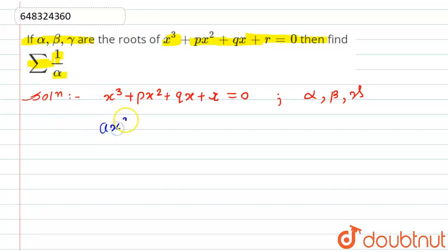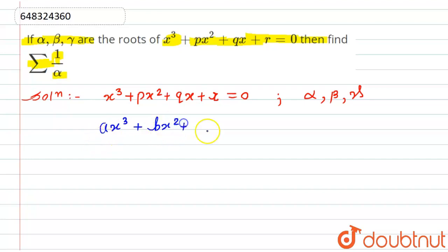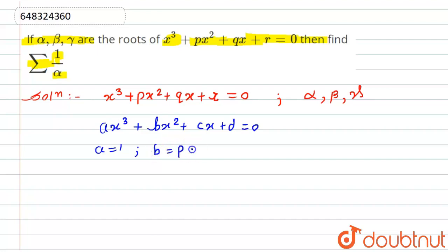As we have this equation, we compare it with the general cubic equation x³ + ax² + bx + c + d = 0. On comparing, we get: a = 1, b = p, c = q, and d = r.